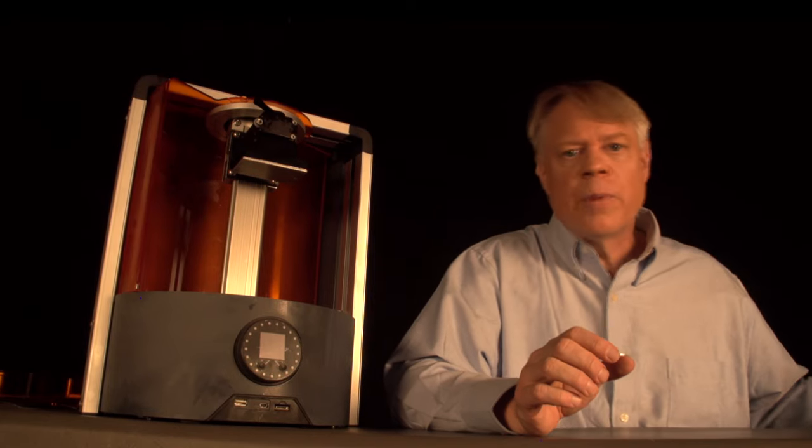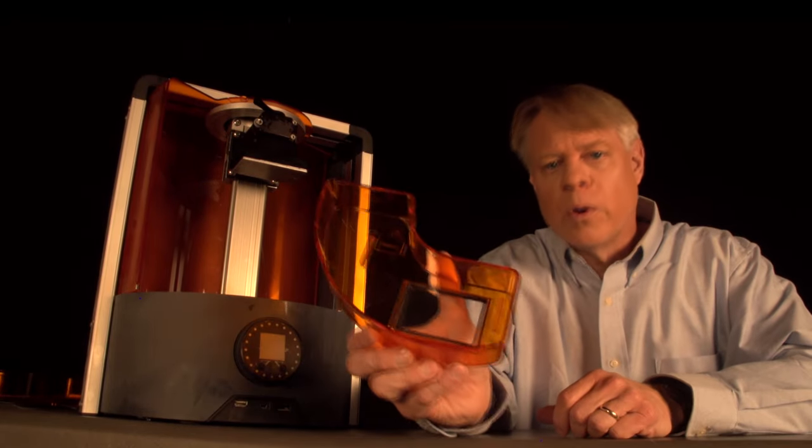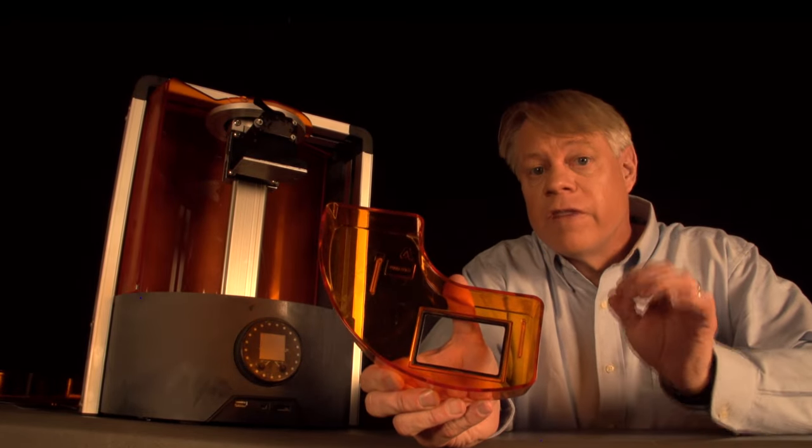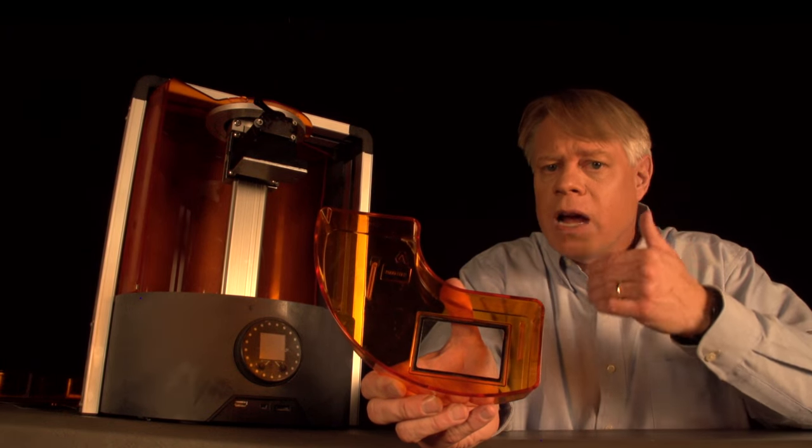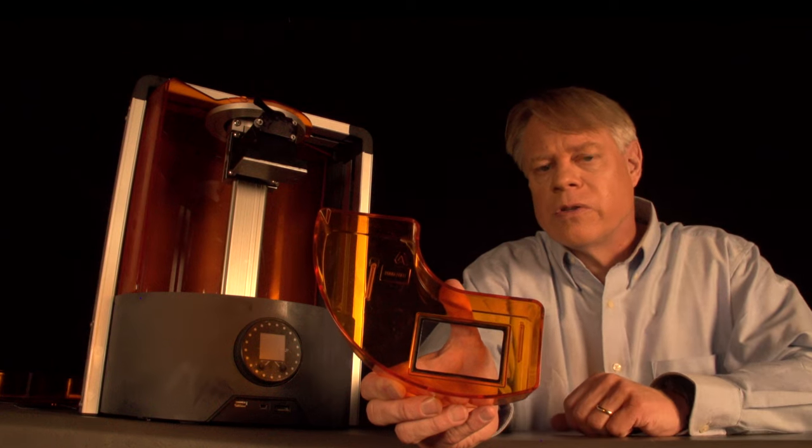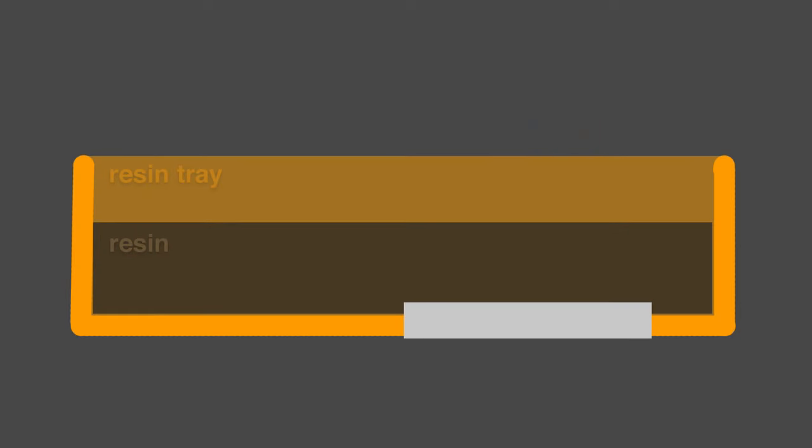Next, let's look at why the resin tray slides sideways after each layer. In a bottom-up print, the layer is built on a window. This machine would fail if the cured resin stuck to the window. Most 3D printing resins have the property that oxygen hinders the chemical reactions that cause them to solidify. To allow oxygen into the layer, this window is made from silicone, a material highly permeable to gas.